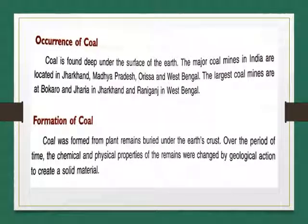How is coal formed? Coal was formed from plant remains buried under the earth's crust. Over a period of time, the chemical and physical properties of those remains were changed by geological action to create the solid material called coal.